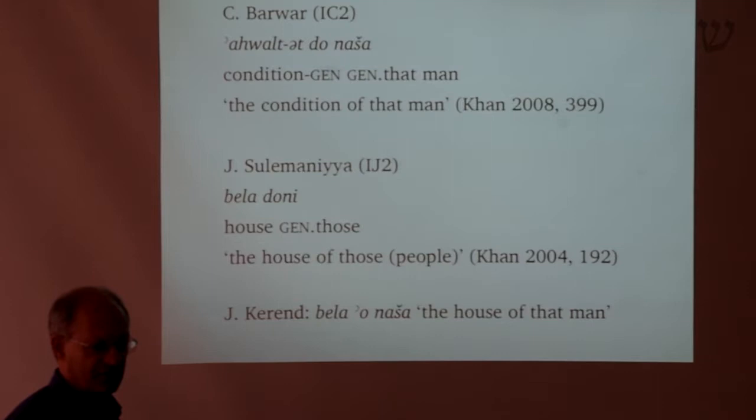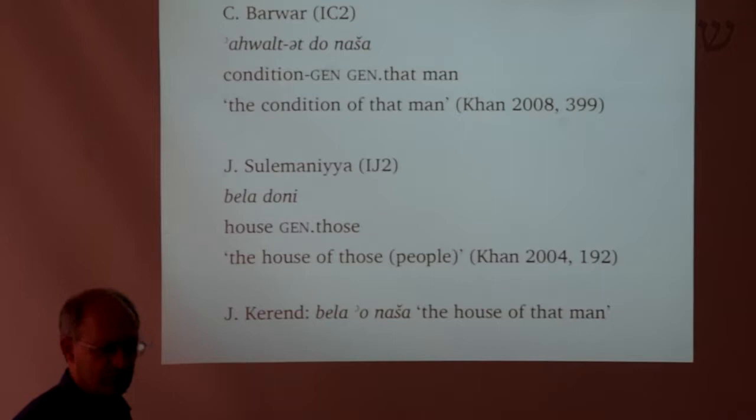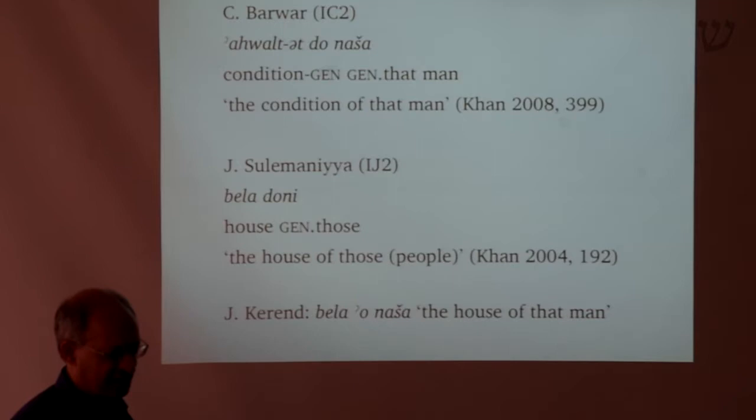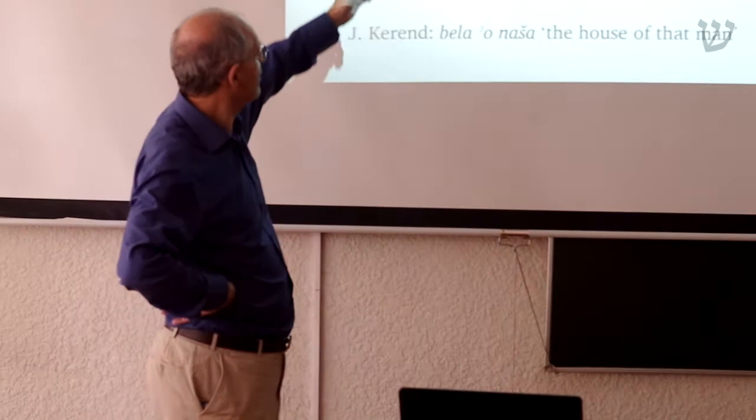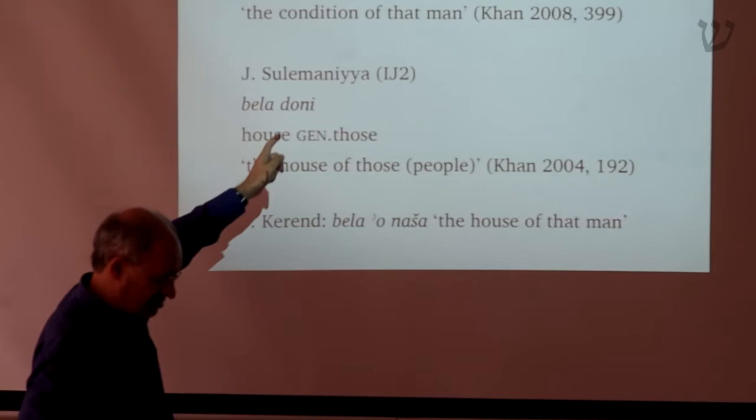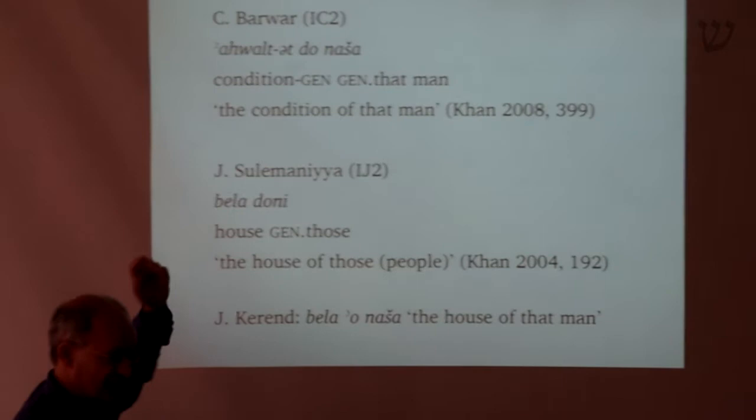Therefore in Barwar there are actually two inflections of demonstrative pronouns: what I call the nominative 'or', and then there's the genitive or oblique form 'door'. This is an innovation — having nominative and oblique — because in early Aramaic there was only a nominative independent pronoun. This development has been induced by contact with Kurdish, because in Kurdish you have precisely that: two demonstrative pronoun forms — a nominative and an oblique.